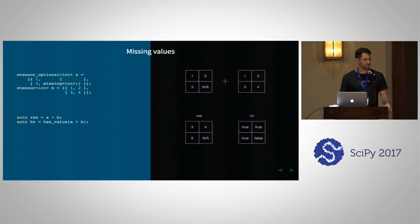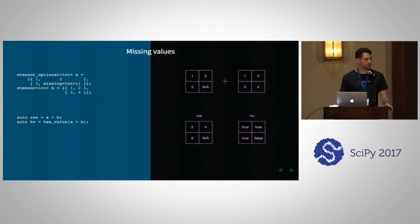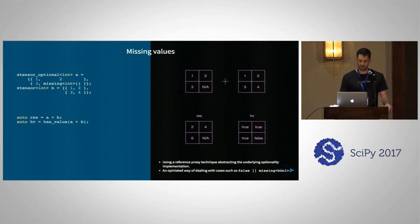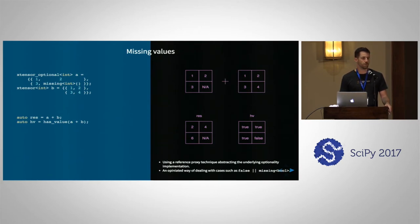Xtensor also supports missing values. You can define an optional tensor using the xtensor optional container and specify missing values with a special missing type. This relies on a technique called a reference proxy that abstracts the underlying optionality implementation. We support any layout implementing optionality — it could be a bitmap with values in two different containers, or alternative values for, say, double and booleans. Both are supported and compatible.